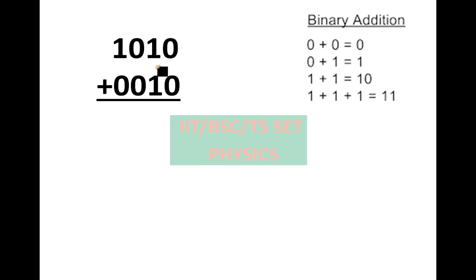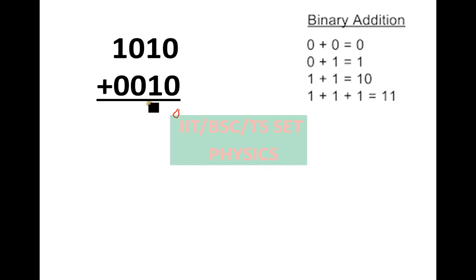For another number: 0 plus 0 is 0. Next, 1 plus 1 — if we use the decimal numbering system we would have 2, but here in binary we have 2 represented differently. We have 0, and 1 plus 1 is 10 in binary.